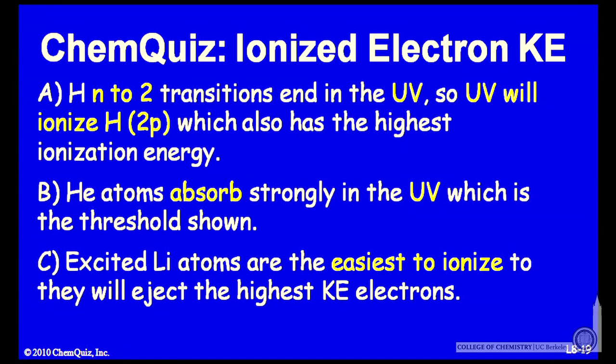Let's look at arguments for each of the possible answers. A: hydrogen for transitions ending in n=2, we saw those are in the ultraviolet region. So ultraviolet will ionize hydrogen in the 2p, and hydrogen in the 2p also has the highest ionization energy.